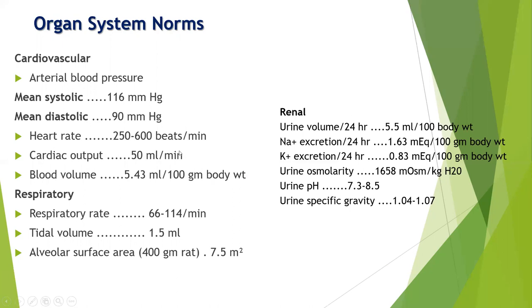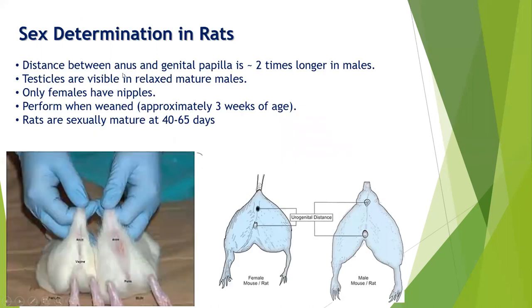Sex determination in rats is carried out by simple observation. There is quite a difference between the urogenital organs. In the male, the anogenital distance is wide, whereas in the female the distance is small. In the male, you can easily observe the testes, whereas in the female you can easily observe the nipples. From this, one can easily differentiate male and female rats.